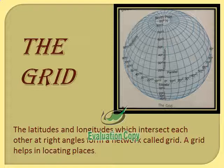Now here you can see the grid. The latitudes and longitudes which intersect each other at right angles form a network called a grid. A grid helps in locating places. In this picture you can see lines of latitude, the equator, the prime meridian, and lines of longitude. Both these lines intersect — they meet at a certain point — and when they intersect each other at right angles they form a network which is called a grid.